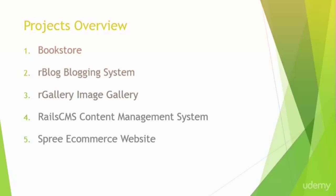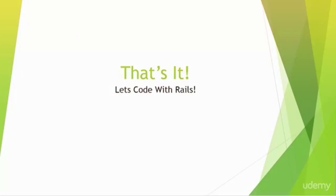And in chapter five, we'll create a full e-commerce website using the Spree gem. Spree is basically a full-featured open source shopping cart. We'll customize it and link PayPal so that users can pay with PayPal. So those are our five projects — I hope you enjoy them and I will see you in the first project. Thanks.